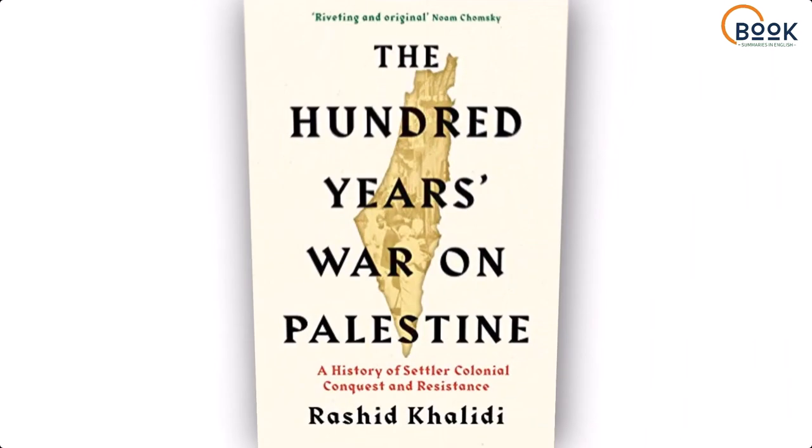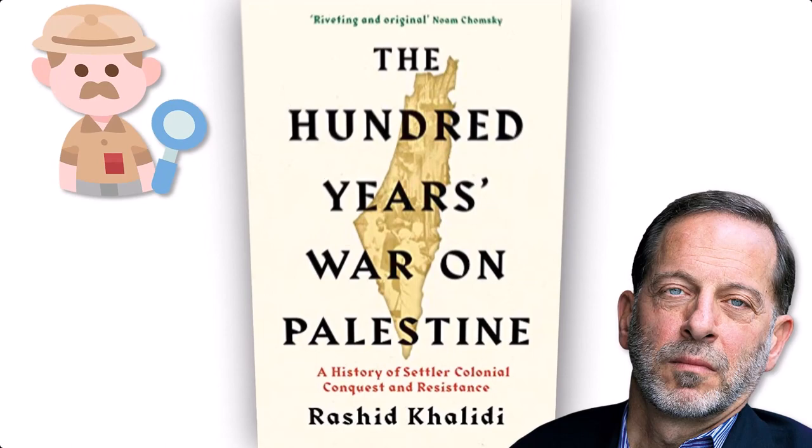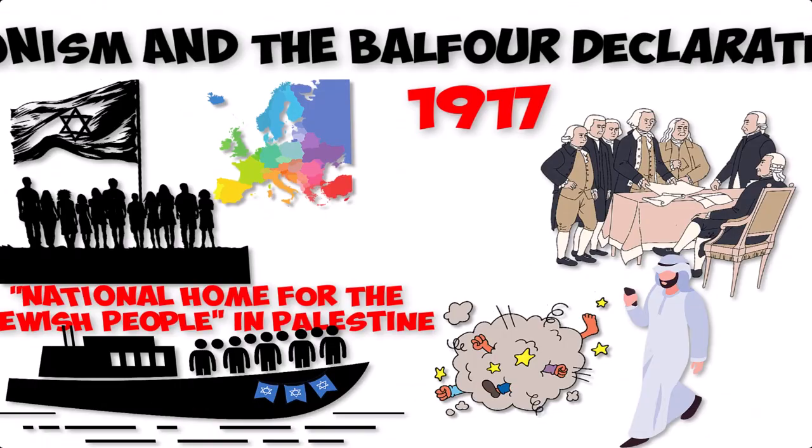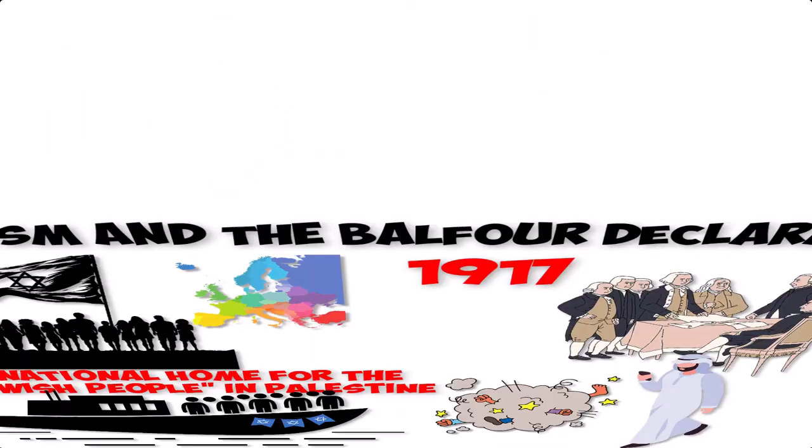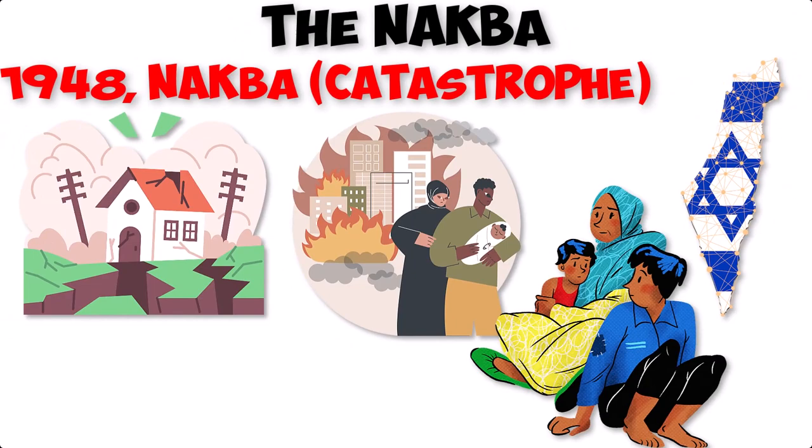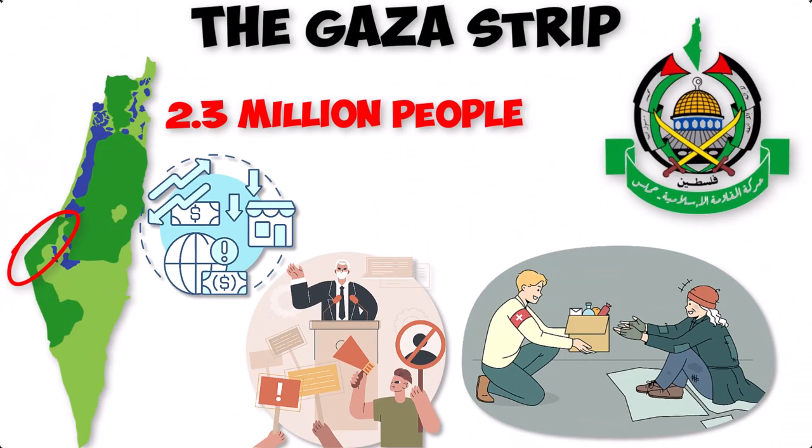The Hundred Years' War on Palestine is a book written by Rashid Khalidi, a prominent historian and academic specializing in Middle Eastern history. The book provides a comprehensive historical analysis of the Israeli-Palestinian conflict, spanning over a century from the late 19th century to the present day. In this summary, we will delve into the key themes, historical events, and perspectives presented in Khalidi's work.